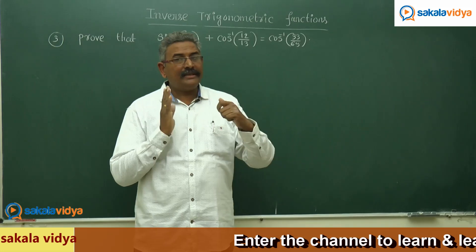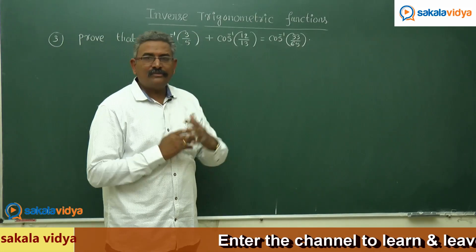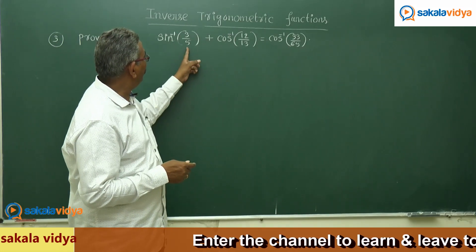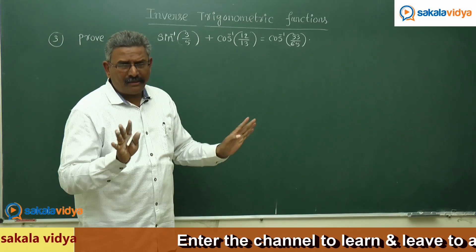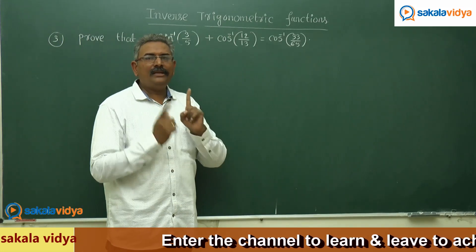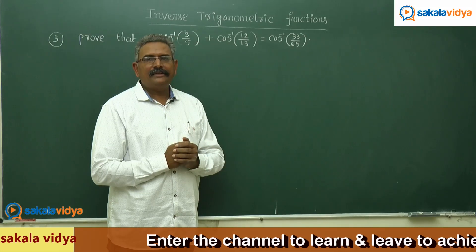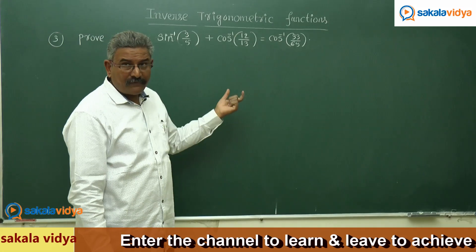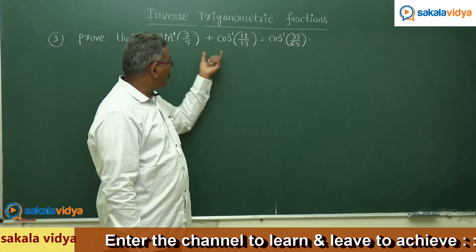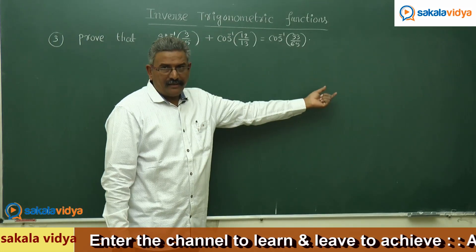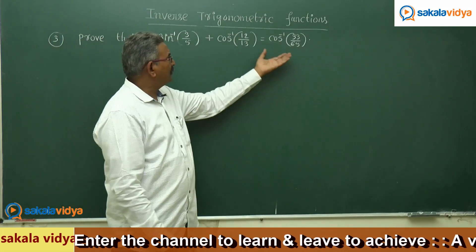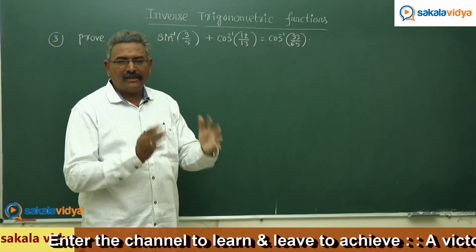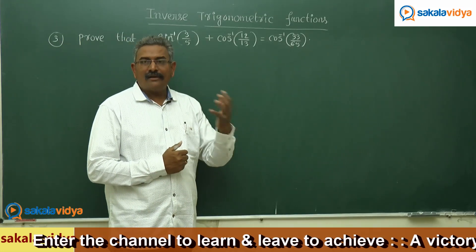You may get some confusion while solving this problem. Note that it is not sin inverse of 3 by 5 and sin inverse of 12 by 30, but you can easily solve it. The key thing to remember is that the problem has to be restated. So we need to prove that cos of alpha plus beta is equal to 33 by 65, so that alpha plus beta becomes cos inverse of 33 by 65. We have to find cos of alpha plus beta.